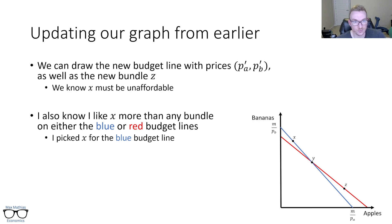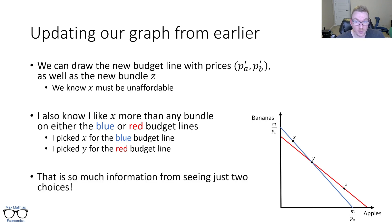But through this indirect revealed preference, you picked Y for the red budget line. And I know you like X more than Y. So if Y was the best you could do with these new prices, I still know X is better than that. So X is better than everything on the blue line and everything on the red line. And I got that from just watching you make two choices. So instead of having to ask you about ranking X to Y, Y to Z, X to Z, X to all of these different things, I just watched you make two choices. And I already know so much about your preferences. That is so much information from watching you make just two choices. That is the power of revealed preference.